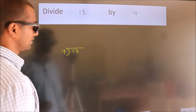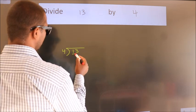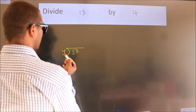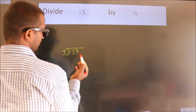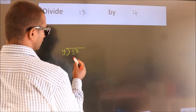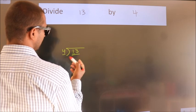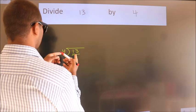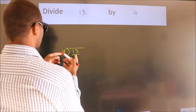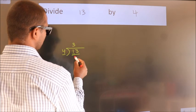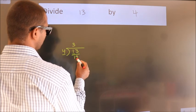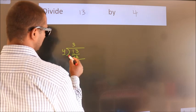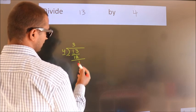Next, here we have 1, here 4. 1 is smaller than 4, so we should take 2 numbers: 13. A number close to 13 in the 4 times table is 4 threes, which is 12. Now we subtract and we get 1.